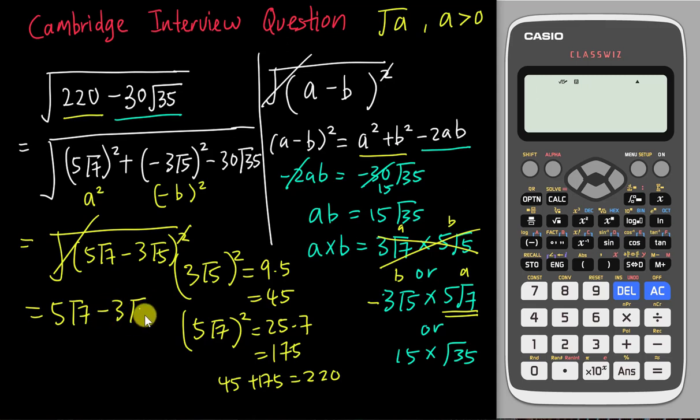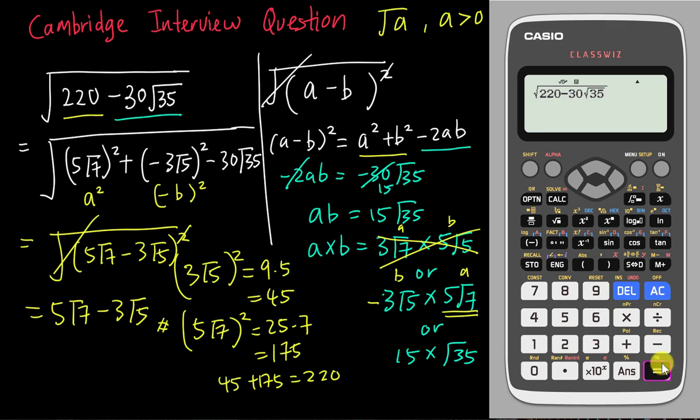I have a calculator here to check, but maybe in the exam—because I heard no calculator is allowed—you need to do it manually. If I use the calculator, it's not possible to leave the answer in surd form, so they tell me 6.52. So I'll check if 5√7 - 3√5 equals 6.52 or not. Yeah, I get 6.52, so I'm pretty confident this is the correct answer.